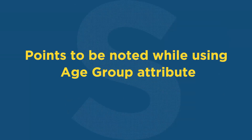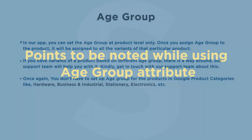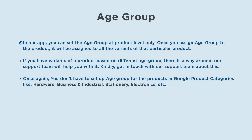Points to be noted while using age group attribute. In our app, you can set the age group at product level only. Once you assign age group to the product, it will be assigned to all the variants of that particular product. If you have variants of a product based on different age groups, there is a workaround — our support team will help you with it. Kindly get in touch with our support team about this.